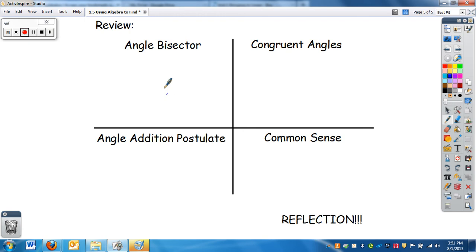Just to review, remember we have an angle bisector, which cuts in half. We have congruent angles, which means they are the same measure. We have the angle addition postulate, which just means two or more smaller angles make the bigger.